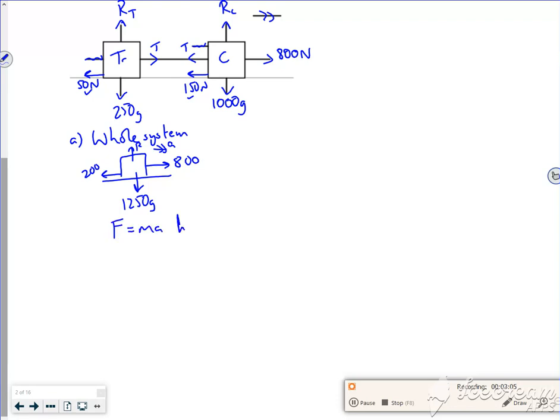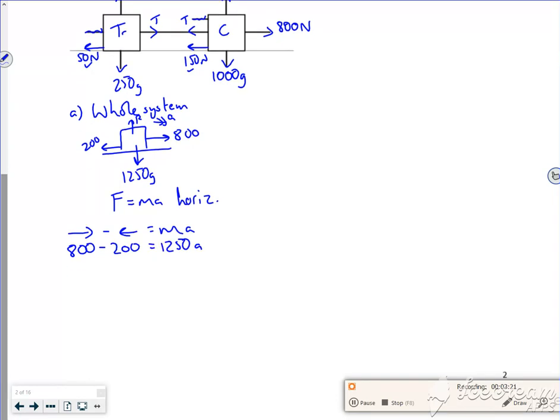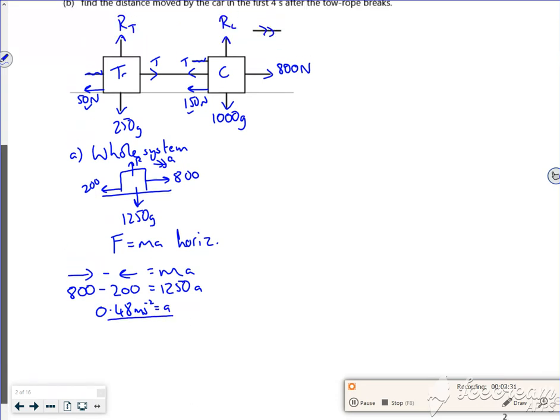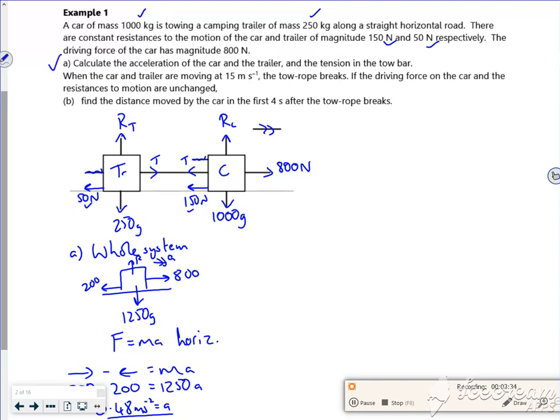So F equals ma horizontally. I've got the force in the direction of travel minus the force opposing is equal to the mass times acceleration. So 800 minus 200 is 1250a. I've got 600 over 1250. That gives me 0.48 meters per second squared for the acceleration there. So that's part A done - calculate the acceleration.